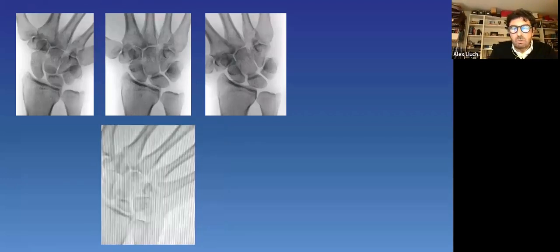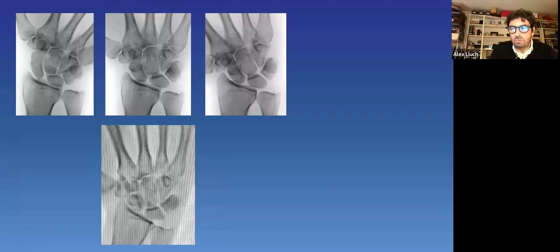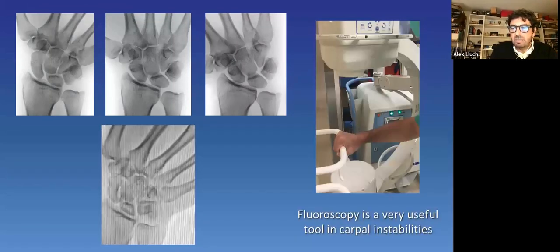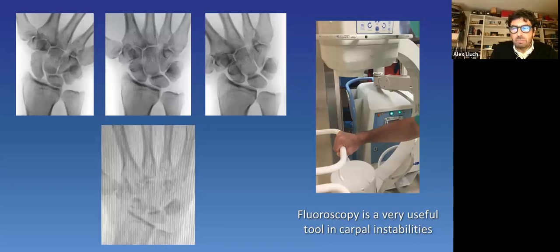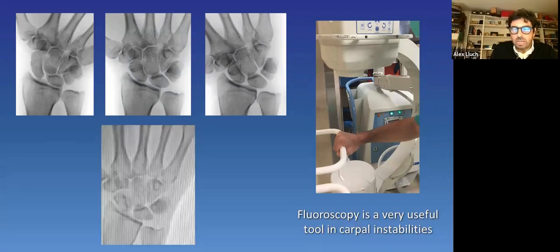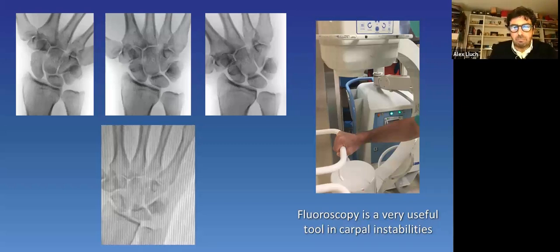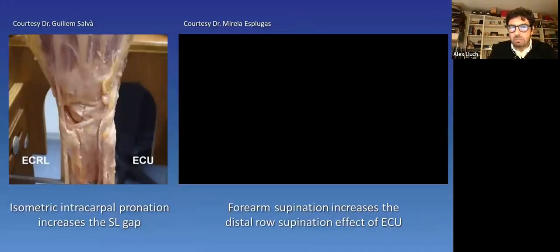Even in the case that good radiological images are obtained, we feel that having a more dynamic exam is more useful. For example, with fluoroscopy, one can change easily the view, focus on the painful area, do an injection, etc. I think fluoroscopy is a very useful tool in carpal instabilities. And one last word about radiology.